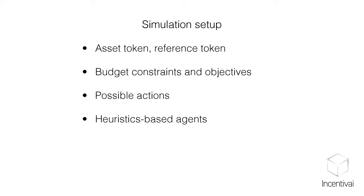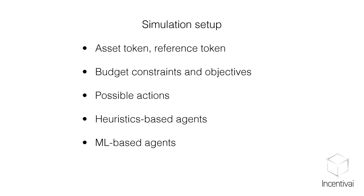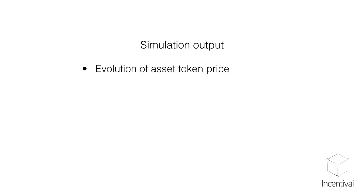In some scenarios you can use heuristics-based agents whose actions are defined by simple rules — something like 'price goes up, sell; price goes down, buy.' These are useful for creating background behavior in the simulation. But the most important part is the machine-learning-based agents, which are the key part of each simulation. These agents observe the environment and possible actions and, given their budget constraints, come up with a strategy that maximizes their objectives — making as much money as possible in the long run.